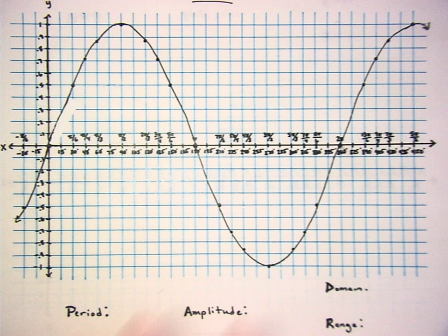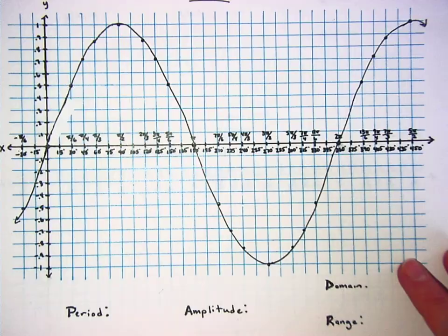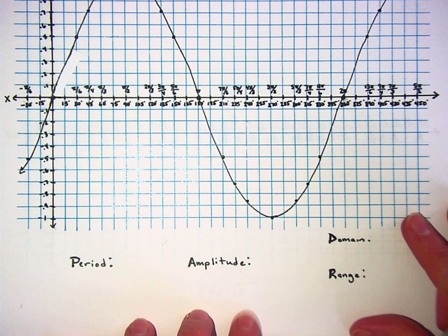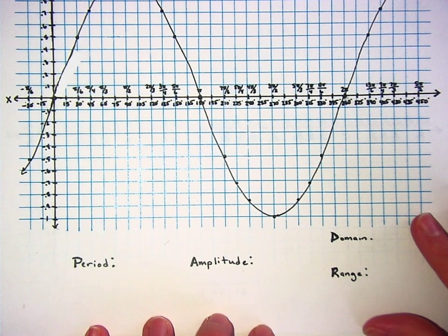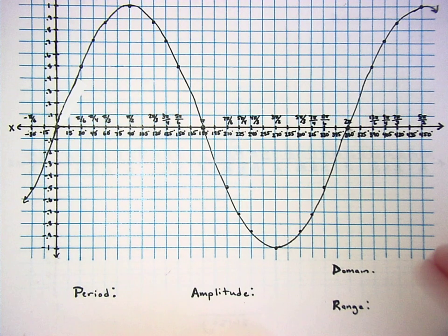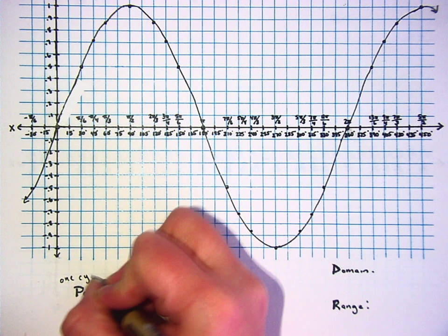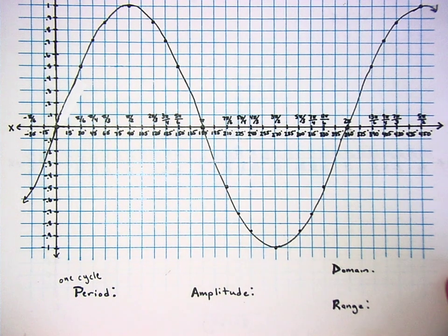So this is the graph of a sine curve. The period of the graph. So what a period is in math is one cycle. I'm going to write above the word period one cycle. How long it takes for you to go through one cycle.